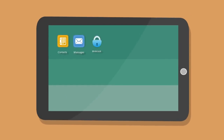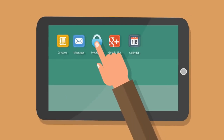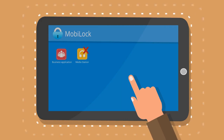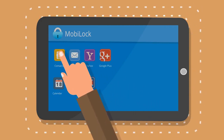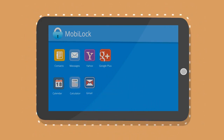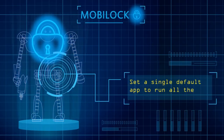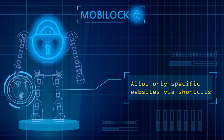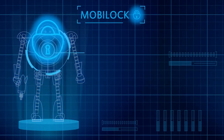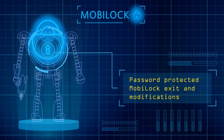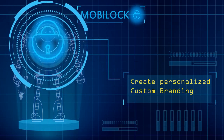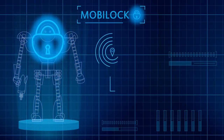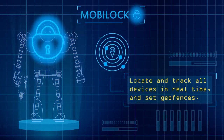Create a secure area for your Android mobiles and tablets, disable the regular home screen, authorize only specific apps deemed right for your business, and manage applications. Set a single default app to run all the time. Allow only specific websites, password protected, personalized custom branding, locate and track all devices in real time.